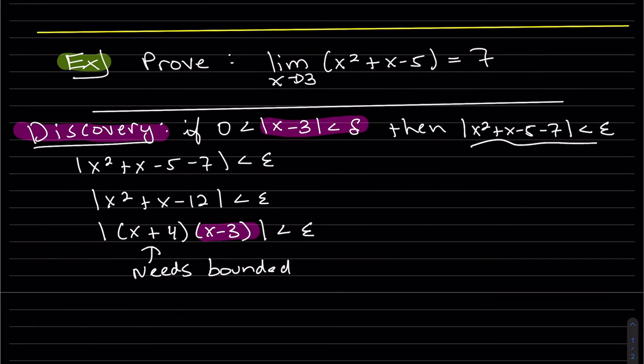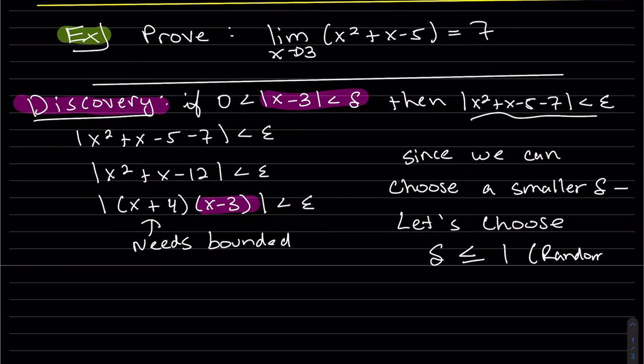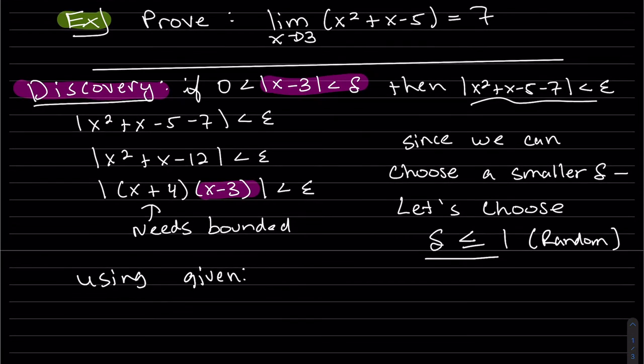And since we just saw, if given a choice, let's say delta less than or equal to 1 is random. You can use delta less than or equal to a half or something smaller, but I thought 1 is easier to work with. So we're going to be using the given. Again, this is still our cheat sheet.